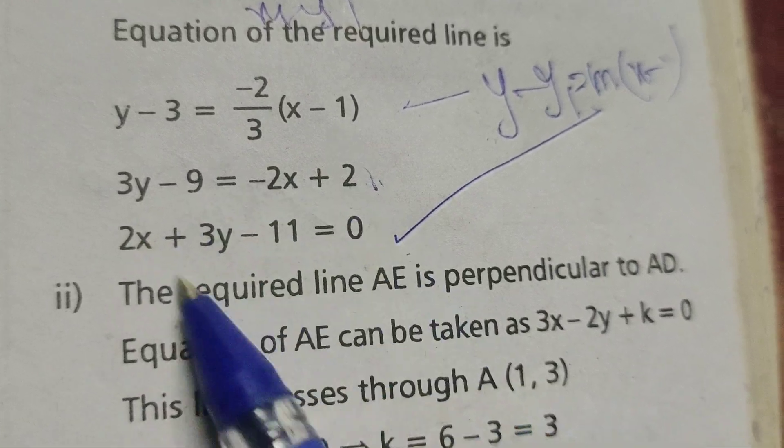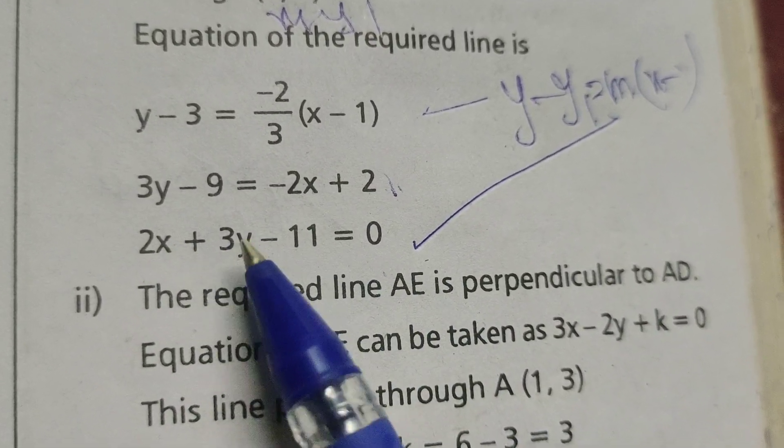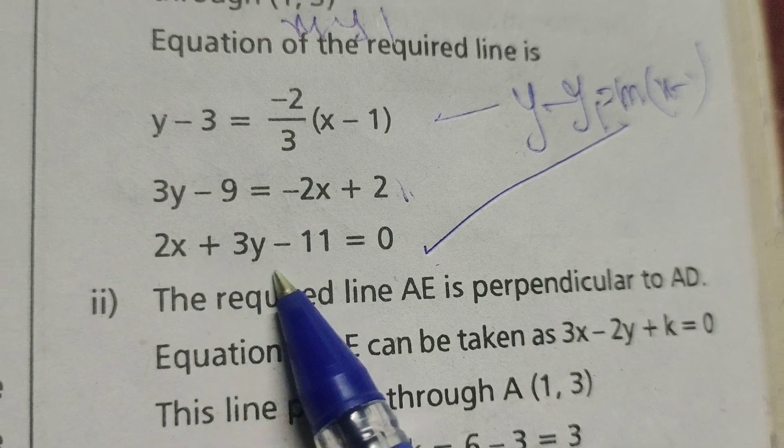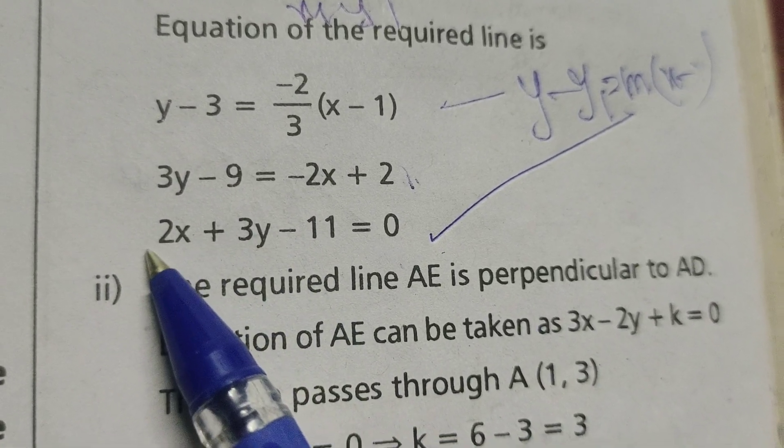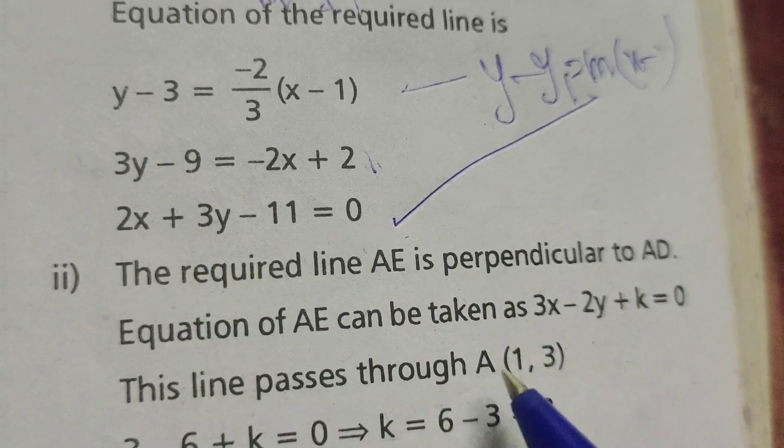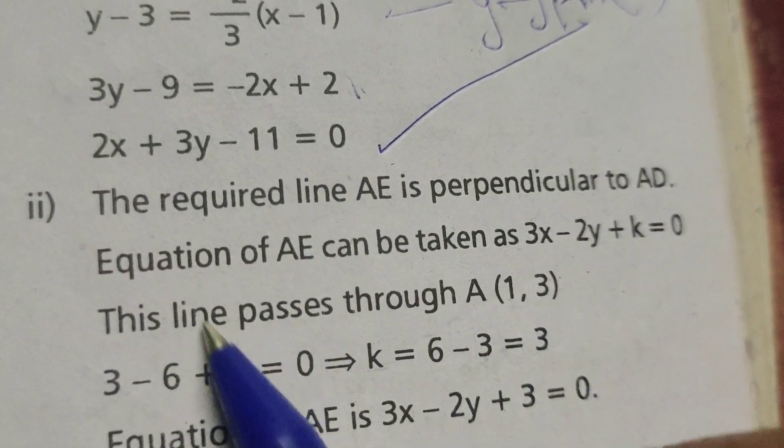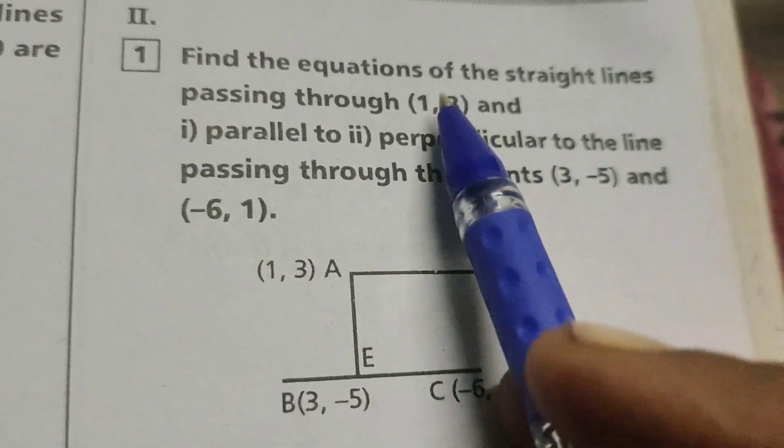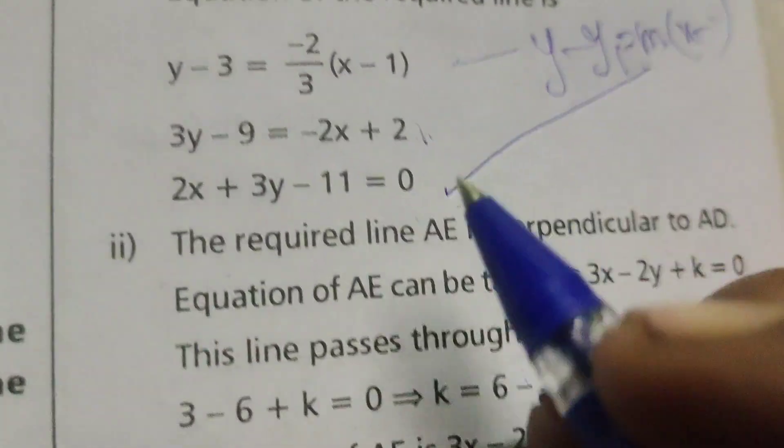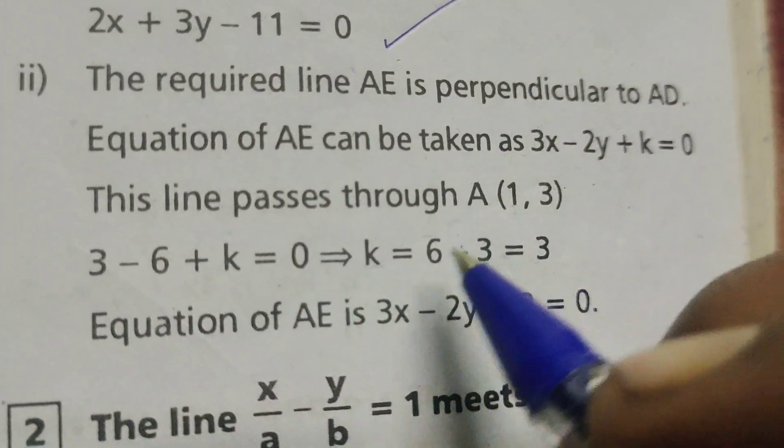Here in this equation, write x coefficient y, 3x minus 2y plus k equals to 0. The line passes through (1, 3). Now find out the perpendicular to this line.